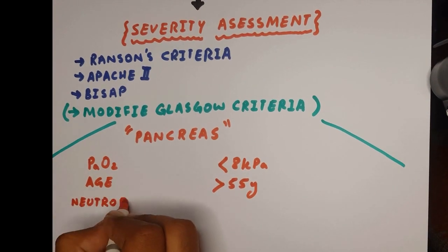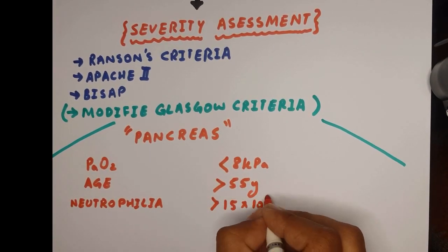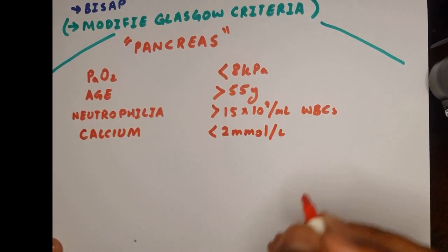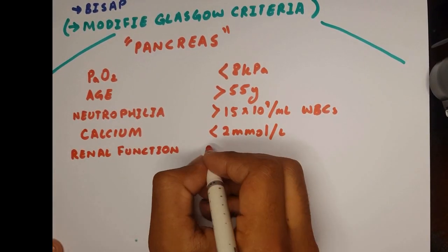Three or more positive factors detected within 48 hours of onset suggest severe pancreatitis and should prompt transfer to ITU or the HDU.